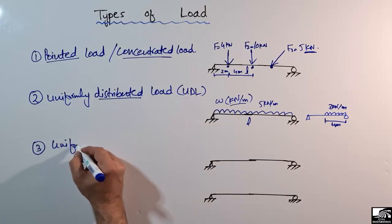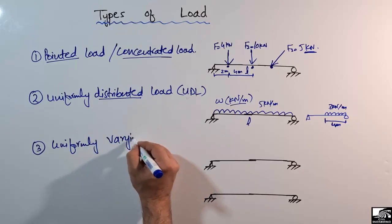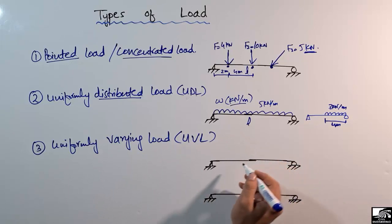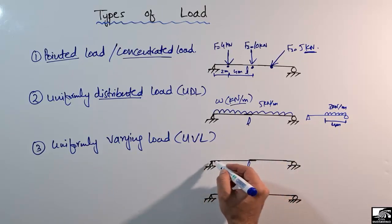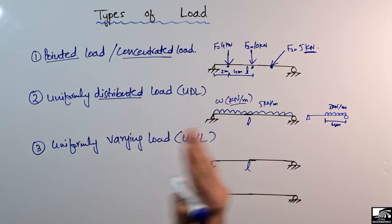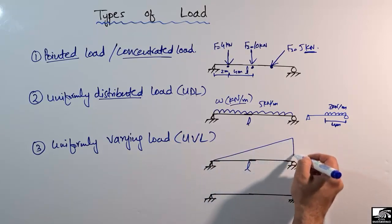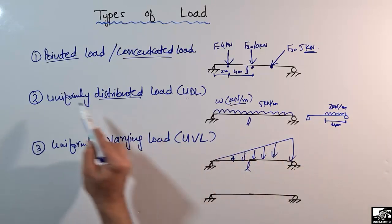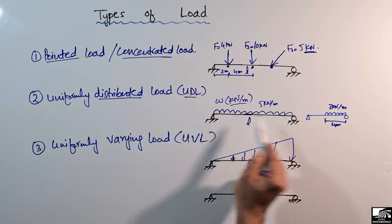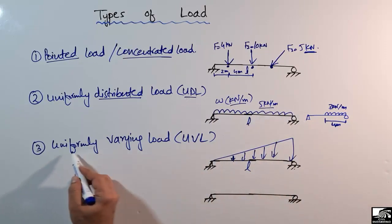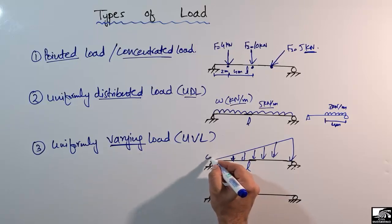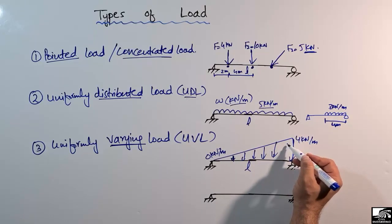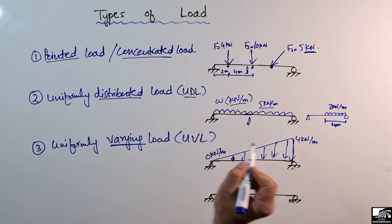The third type of load is the uniformly varying load, or simply UVL. For a beam of length L meters, this load will always change over its whole length. Consider a triangular type of load acting on the beam — unlike the uniformly distributed load which is constant in magnitude, in the UVL the magnitude always changes. For example, from 0 kilonewton per meter at one end to 4 kilonewton per meter at the other end.